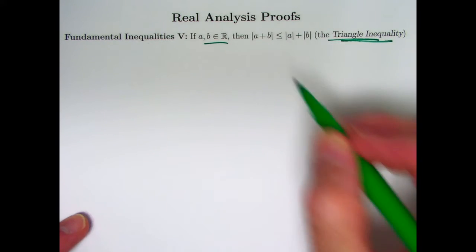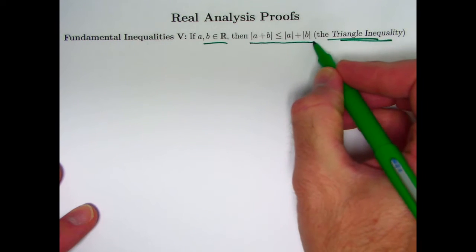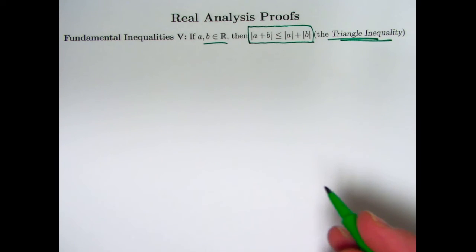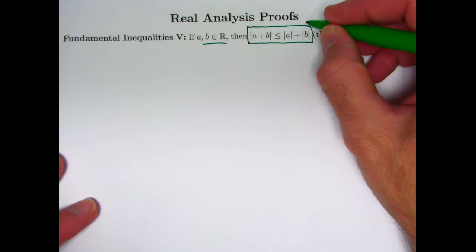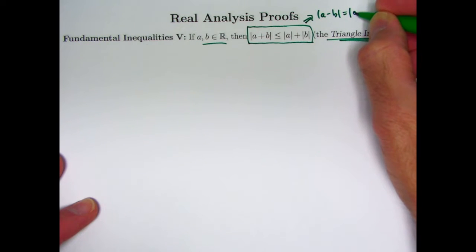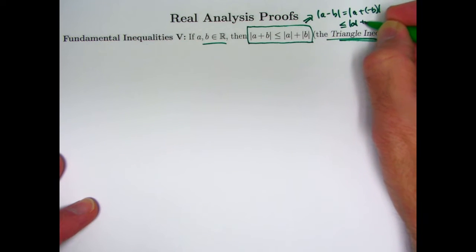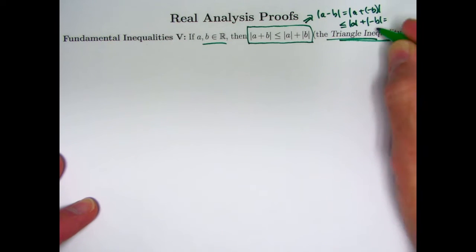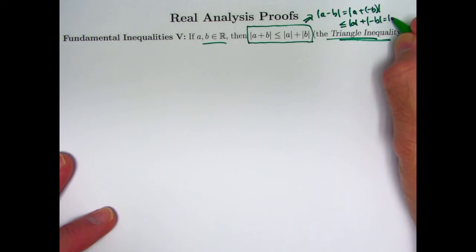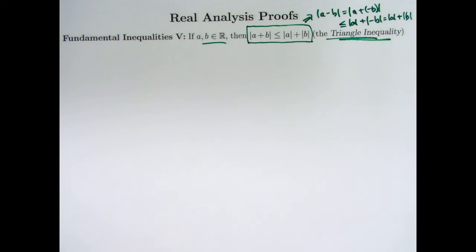Here is the statement. If you've got two arbitrary real numbers — positive, negative, zero, doesn't matter — then the absolute value of a plus b is less than or equal to the absolute value of a plus the absolute value of b. This also implies that the absolute value of a minus b, which is the same as the absolute value of a plus negative b, is less than or equal to the absolute value of a plus the absolute value of negative b, which by properties of absolute value equals the absolute value of b itself. So you can say something similar for the absolute value of the difference of two real numbers.